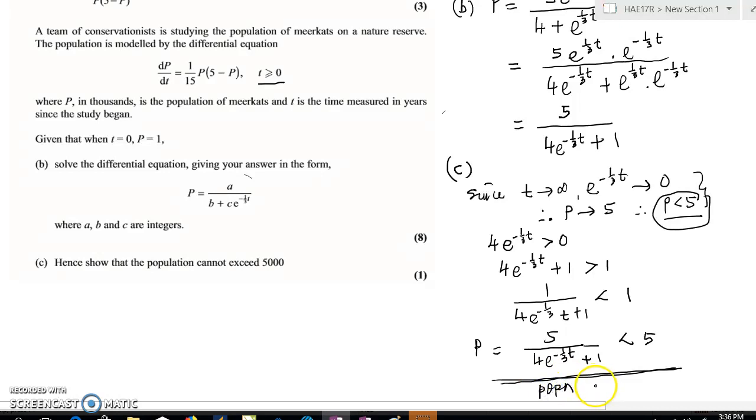Population cannot exceed - answer accordingly 5000, because P is measured in terms of 1000. So 5 here means 5000.